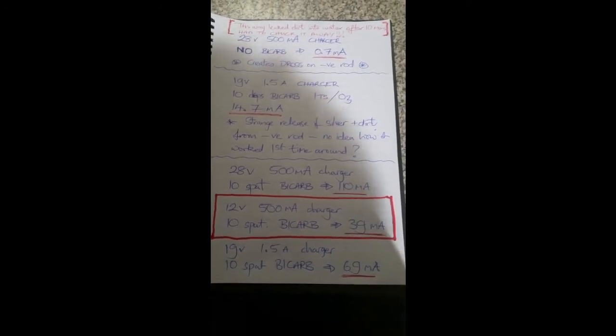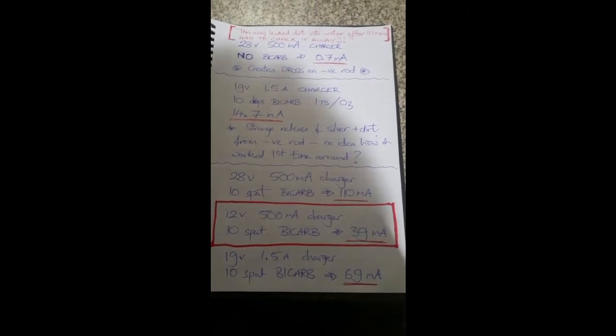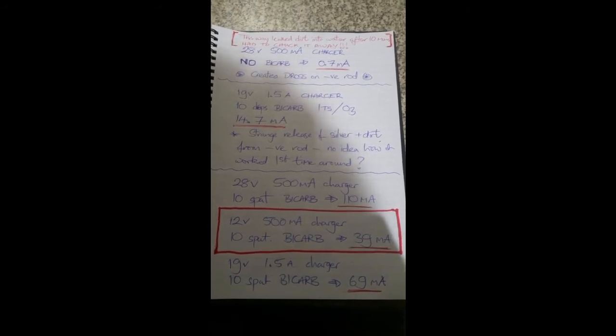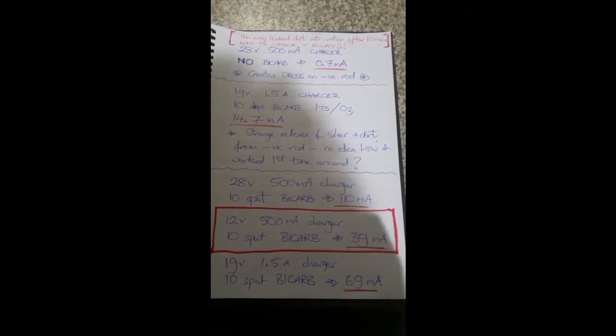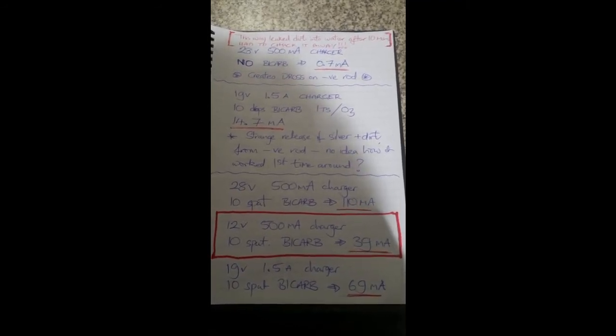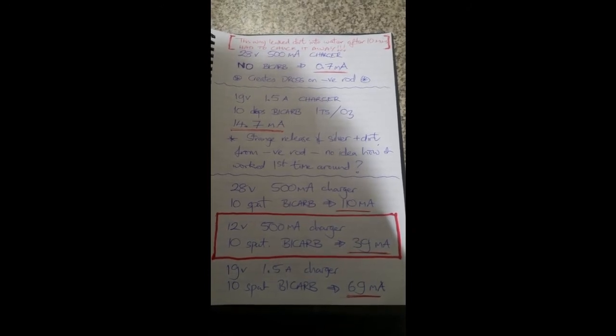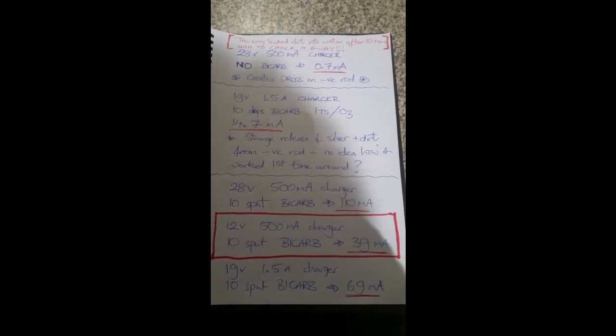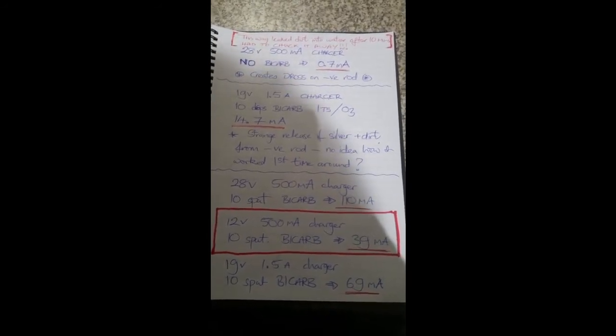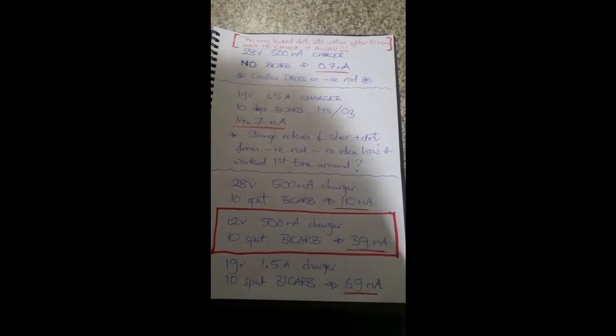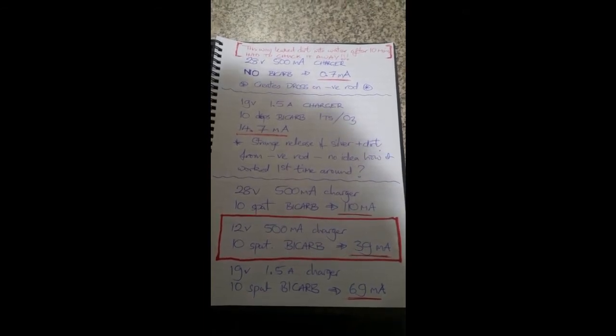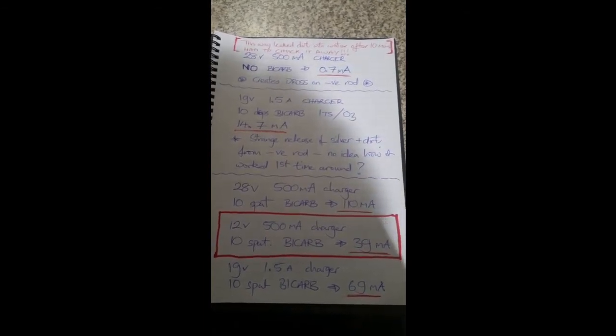The next option down is a 12 volt 500 milliamp charger DC supply, again 10 tiny spatulas of bicarb to one pint of distilled water, creates 39 milliamps, which is the lowest amperage and the lowest current that I've managed to make colloidal silver with. Therefore, going with this option because I am aware that the lower the current, the smaller the particle size is a desirable result that we're looking for.